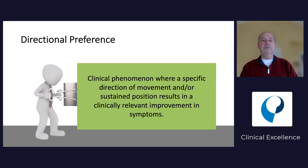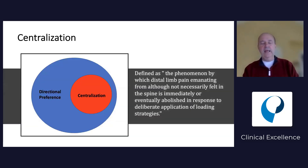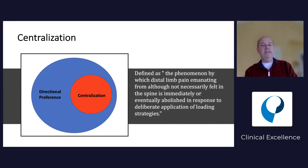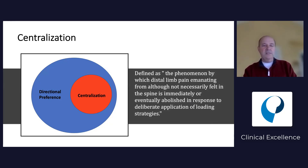We could use directional preference for spine patients, where we call it centralization. We can also use it for extremity patients, where we call it localization. Directional preference is the big category, and within that, the spine part is centralization. That means through repeated movement or position, that pain will become more centralized - moving from more distal to more proximal. For extremities, we talk about localization.